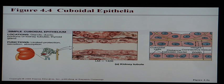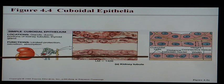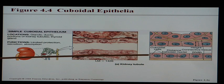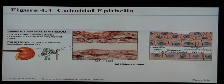Another example: one cell layer thick — so simple — and the shape is a cube or square, so cuboidal. This is simple cuboidal epithelia. Because it's simple, we'd expect to find it somewhere deep inside the body away from abrasion. This was taken from inside the kidney, which is well protected.